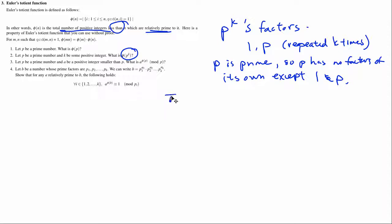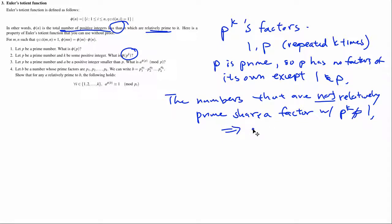So the numbers that are not relatively prime are those that share a factor, right? A factor with p^k, that is not equal to 1, which implies that they are multiples of p. Because as long as there is a p in there, then we don't have a relatively prime number.